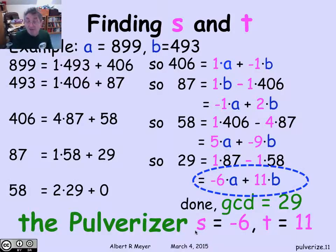This is a perfectly general procedure that will always give you coefficients s and t that express the GCD of a and b in terms of a and b.